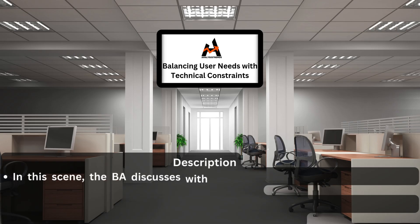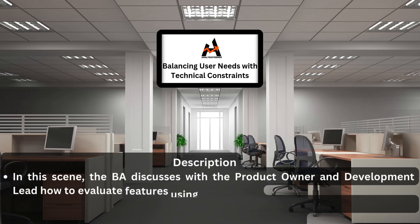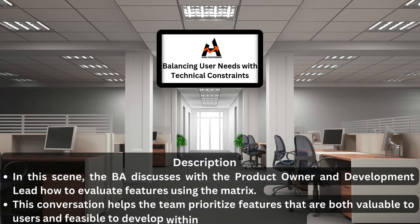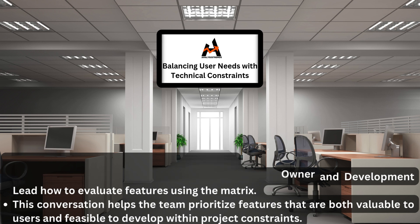Description. In this scene, the BA discusses with the product owner and development lead how to evaluate features using the matrix. This conversation helps the team prioritize features that are both valuable to users and feasible to develop within project constraints.